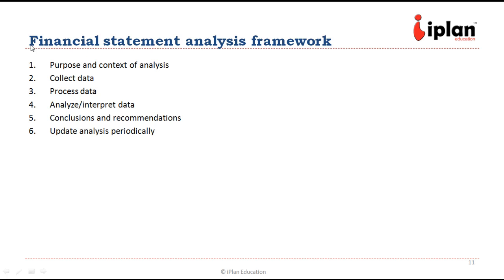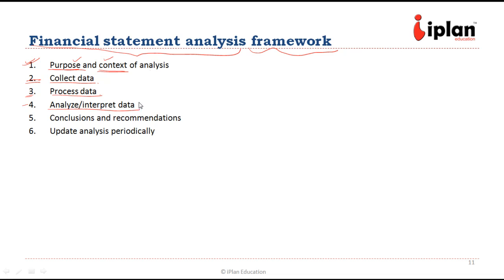The financial statement analysis framework includes six steps. The first and most important step is defining the objective or purpose of the financial statement analysis and its context — we need to be very clear about the purpose and context before conducting a fair analysis. Second, we collect the data accordingly. Third, we process the data. Fourth, we analyze and interpret the data. Fifth, we make conclusions and recommendations. Sixth, we update this analysis periodically — as and when there is a change in data, we update the analysis and our conclusions or recommendations may change accordingly.